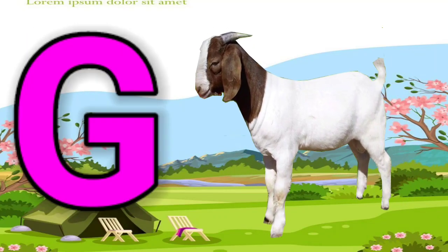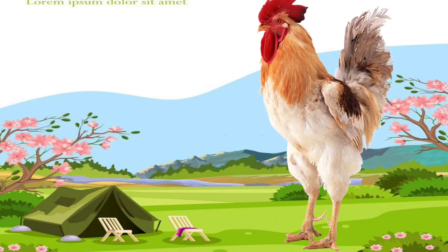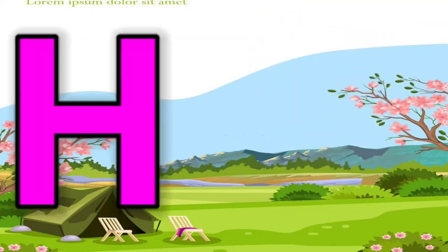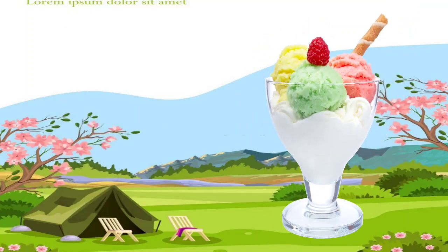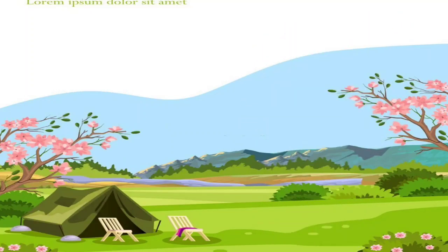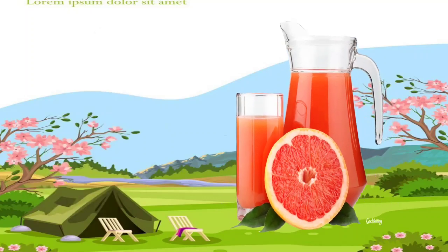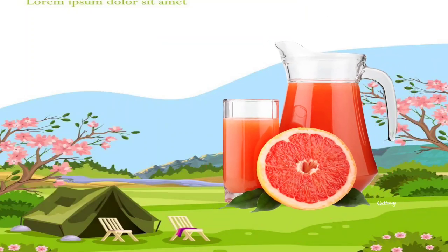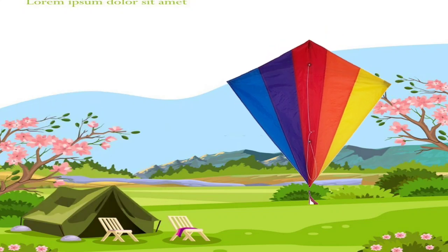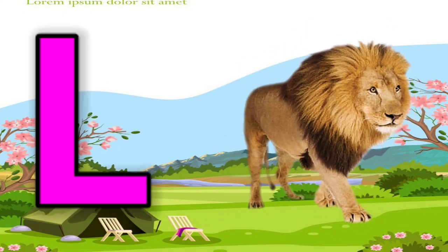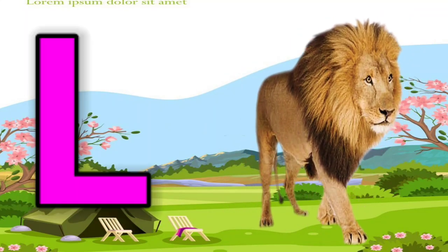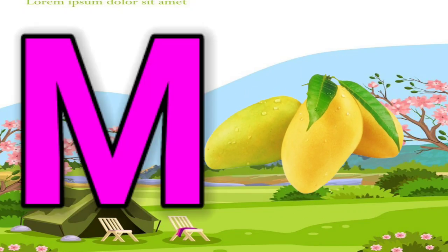G for goat. H is for hand. I for ice cream. J for juice. K for kite. L for lion. M for mango.